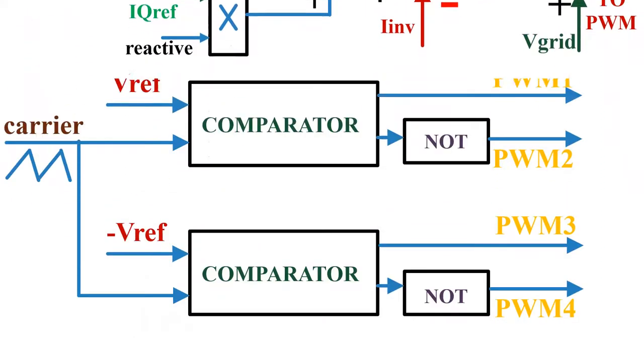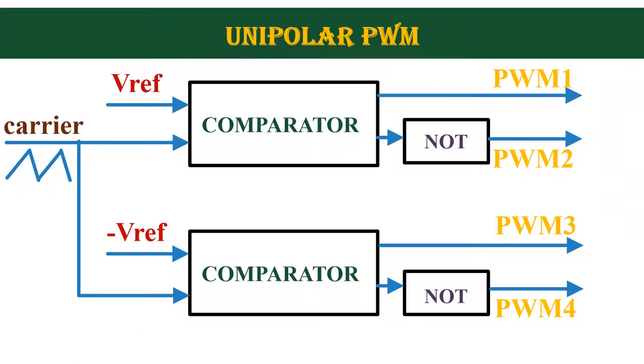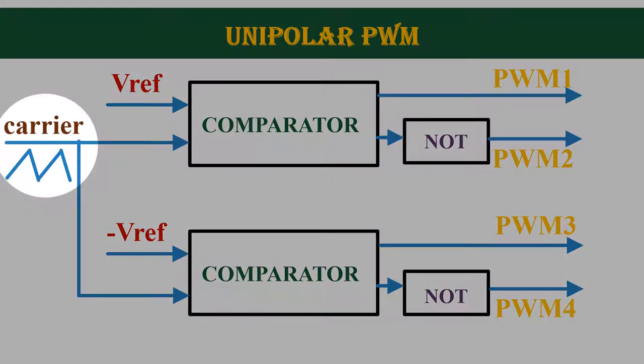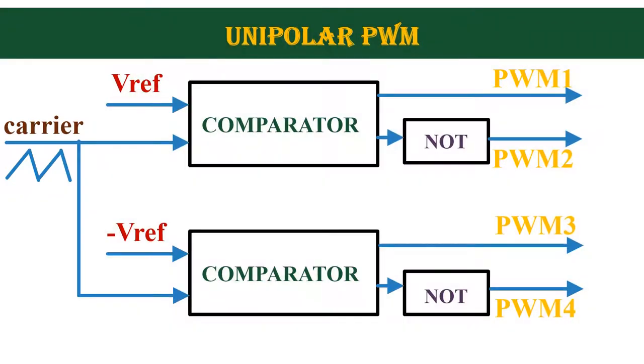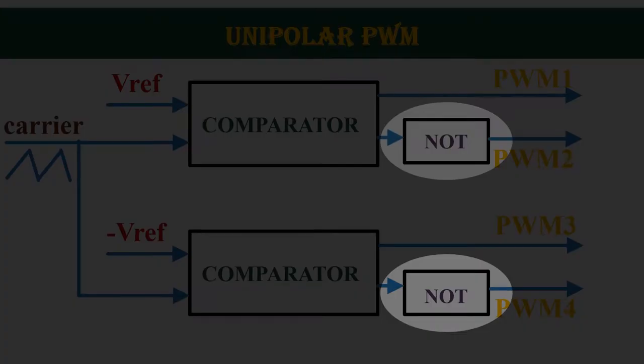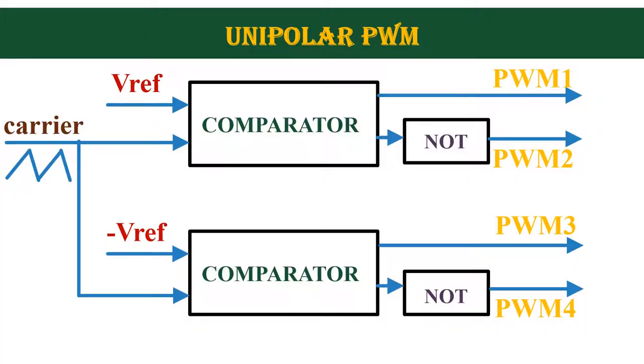This is the PWM generation block. We are using unipolar PWM technique. So the reference voltage is compared with triangular carrier wave. Since we are using unipolar PWM, positive and negative references are compared. Output of each comparator is inverted and connected to each IGBT.